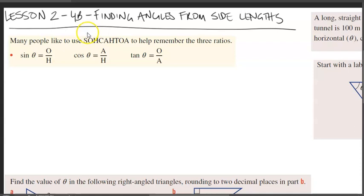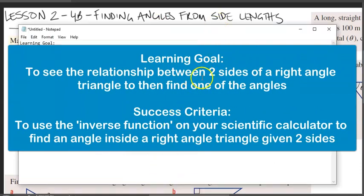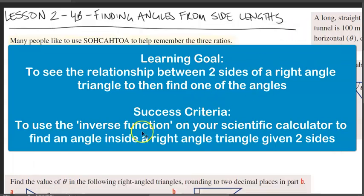From the previous exercise 4a, we were given a length and an angle and could find one of the side lengths. In this case, we're going to be finding a specific angle from the side lengths, generally two side lengths that are given to us. The learning goal is to see the relationship between two sides of a right-angled triangle to then find one of the angles. The success criteria is to use the inverse function on your scientific calculator to find an angle inside a right-angled triangle given two sides. The inverse function is an option you have not seen before, prior to this.